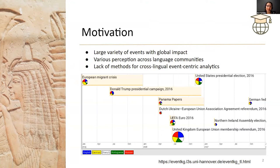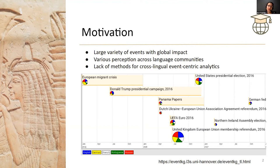There are many examples of why this topic is very up-to-date and very important. We have a large variety of events which have global impact. Here is a small interface showing examples of events related to Brexit, and when we think about these events, we see that the perception and the impact vary across communities, across languages, across language communities and people around us in different countries.